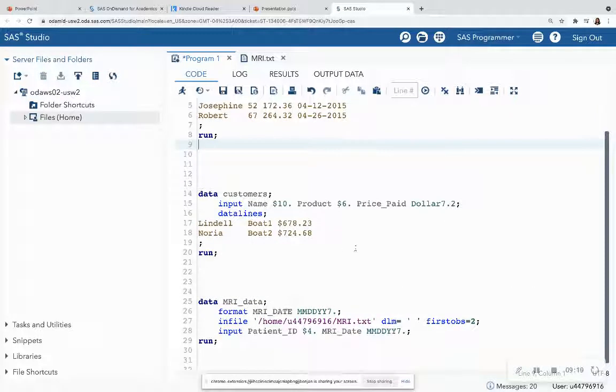All right. So the next example is using that dollar 7.2 informat. So once again, I have two data lines, so I'm not reading in any raw files. And I have the name of length 10, the product of length 6, and then the price paid. The entire number, including the special characters, is 1, 2, 3, 4, 5, 6, 7. So that whole number is 7, and it has two decimal places. That's how we get the .2.